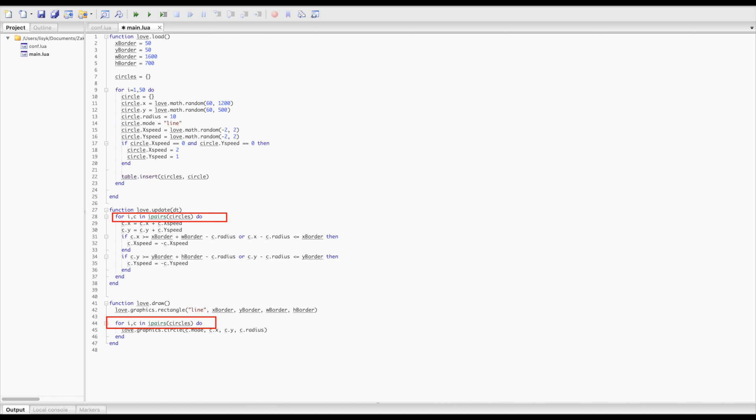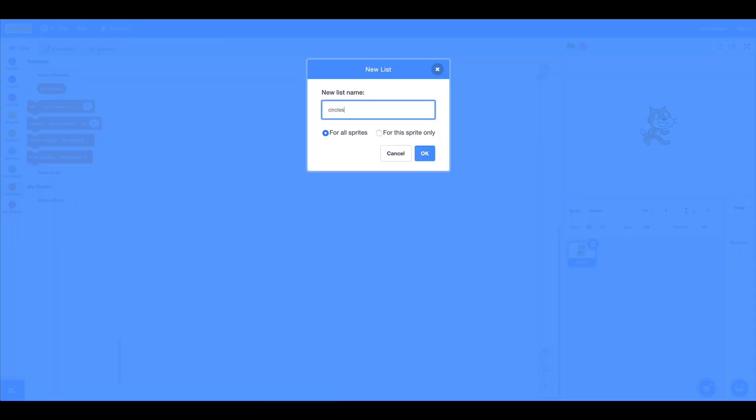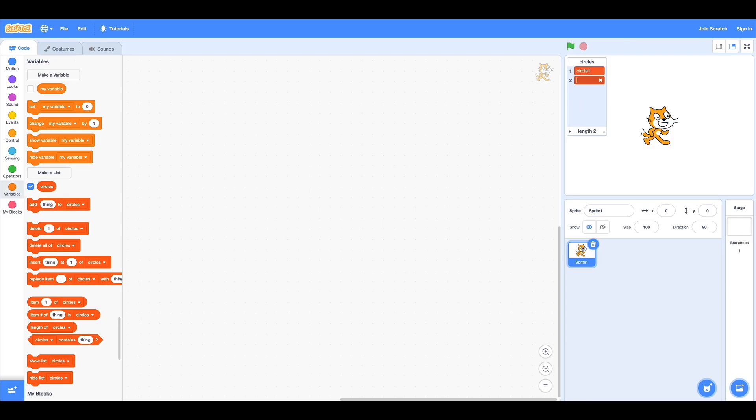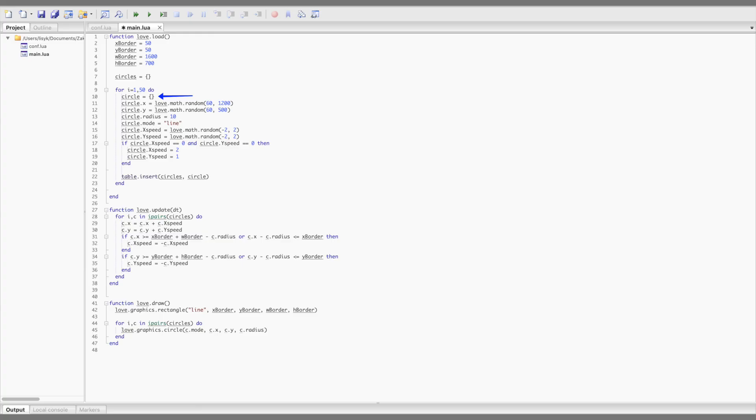So similarly to the variables, a table is basically a list of values. Do you remember the make a list command in Scratch? Yes, it does the same thing in love2d. It allows you to create a list of values. To create an empty table in Lua, you just need a table name and assign it to curly braces. That's it, your table is created. And this is what we've done in our program also.